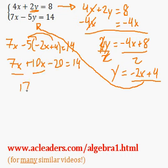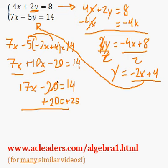7x plus 10x is 17x, minus 20 equals 14. Now I can add 20 to both sides of the equation. These guys go away, and 17x is going to be equal to 34.